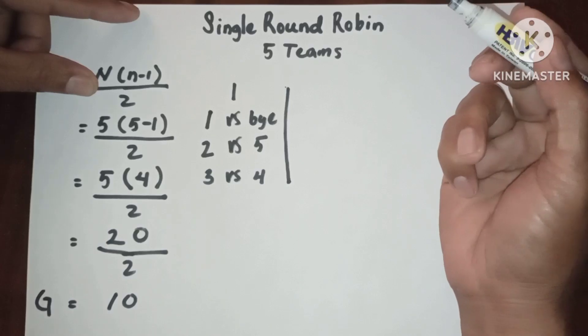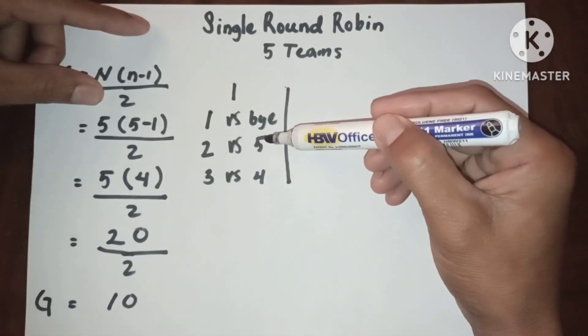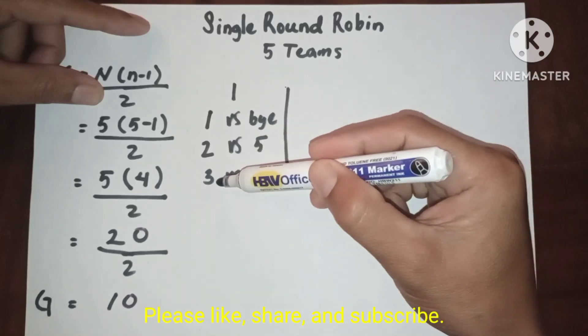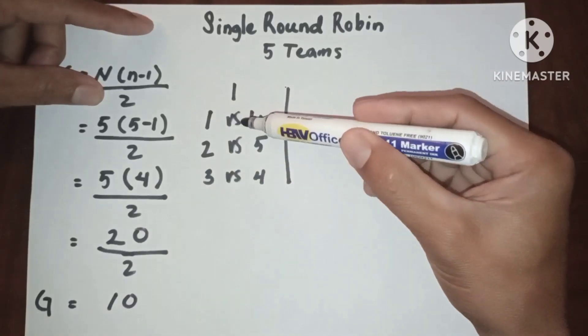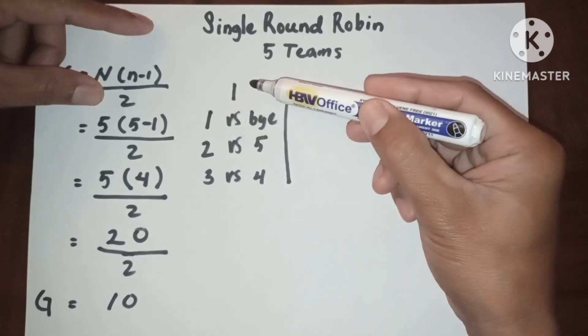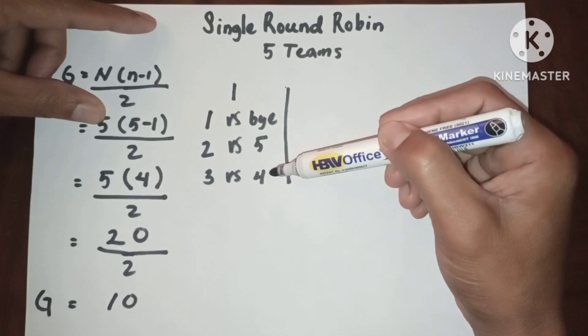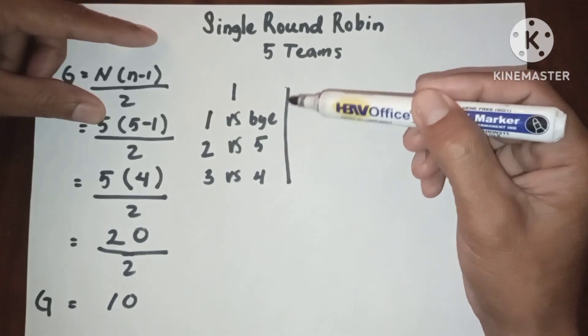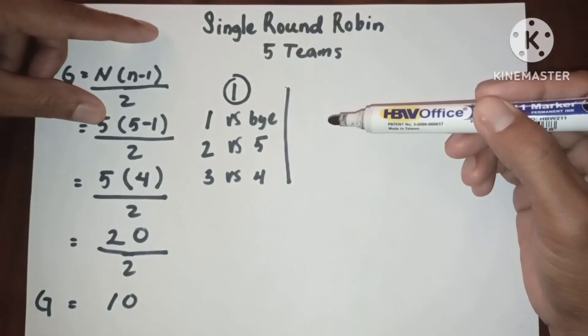So this is round one. Since we have two games: two versus five, three versus four, and one will be the first by in round one. We can assume that we can only create five rounds. Now let's proceed to the second round.